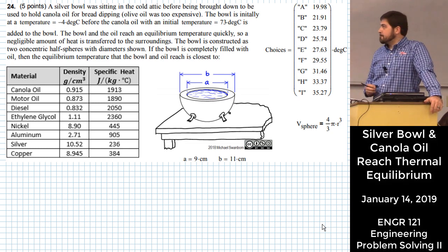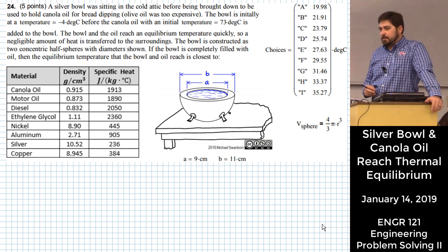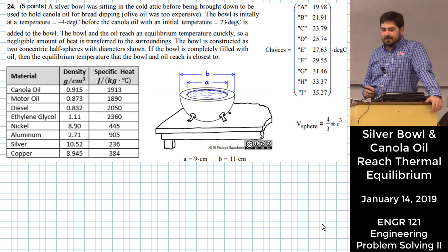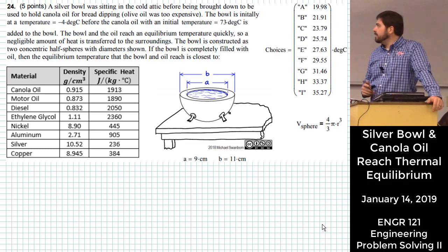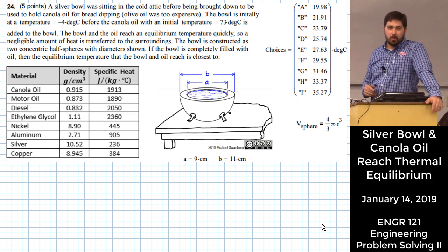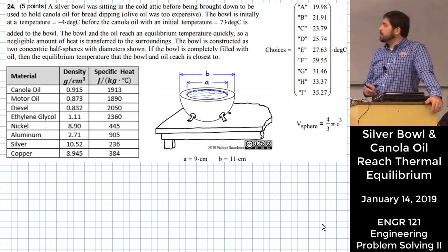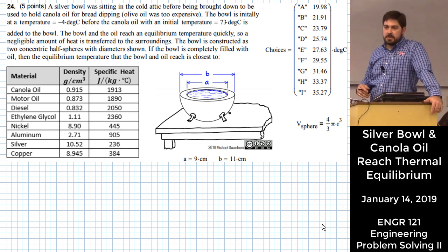So let's figure out for this canola oil dipping bowl, let's figure out what temperature the oil and the bowl get to after you pull the bowl down from the attic. It must have been a very cold attic, negative four degrees Celsius. So that's what temperature the bowl starts out and the oil starts out with an initial temperature of 73 degrees C. What we want to do is try to figure out what temperature the two get to.